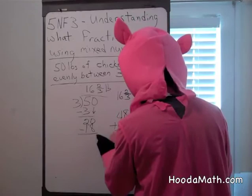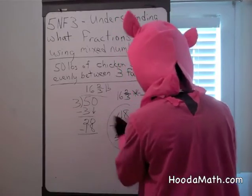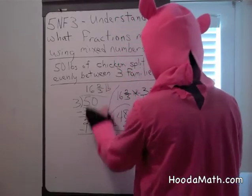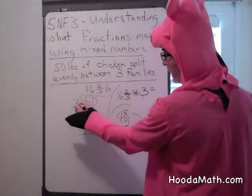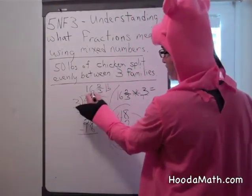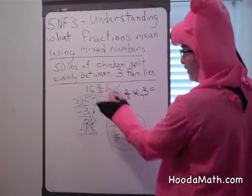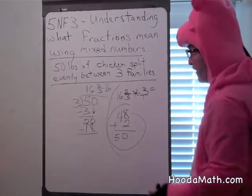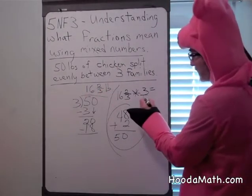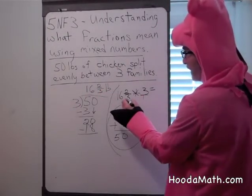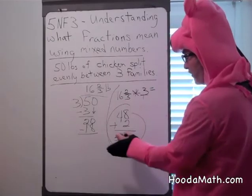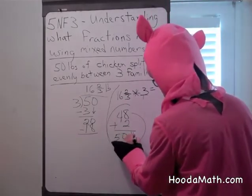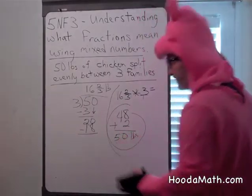Add — fifty pounds. So when we divided fifty by three, we got sixteen and two-thirds pounds. When we multiplied three times sixteen and two-thirds, we got fifty pounds also.